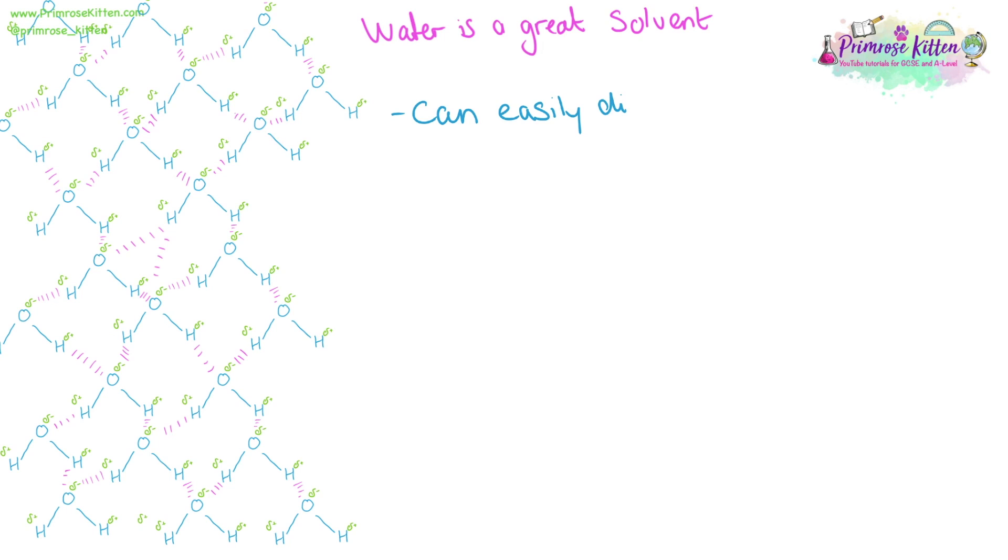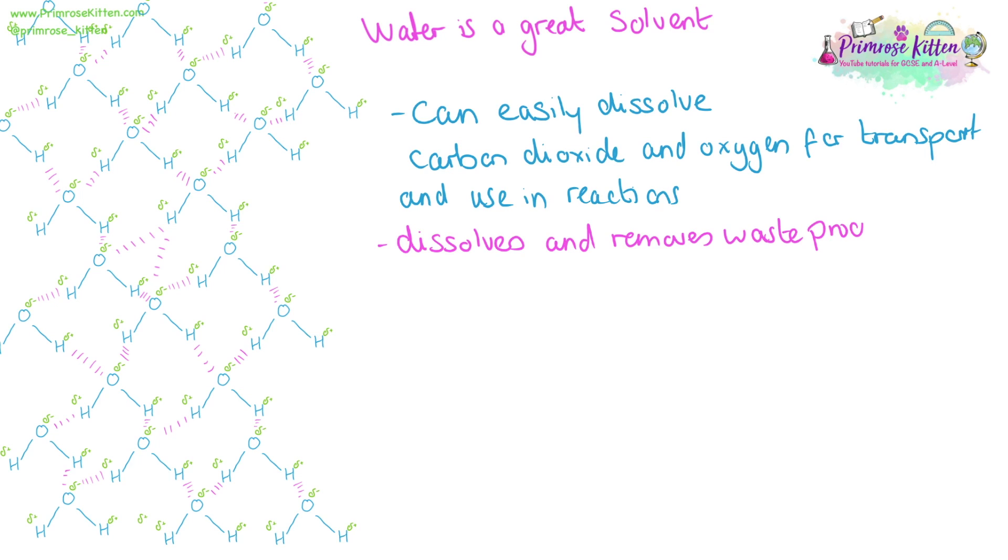Water can easily dissolve lots of things. Important ones are carbon dioxide and oxygen, moving them around for use in reactions. It is great at dissolving and removing waste products from reactions, such as urea.